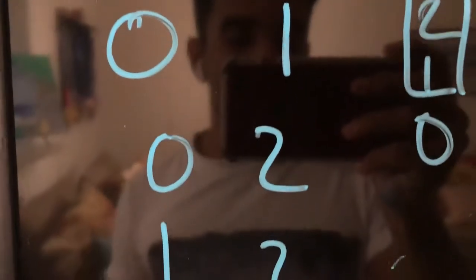So we have 0, 1, 0, 2, 1, 2, 2, 0, 2, 3, and 3, 3.